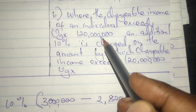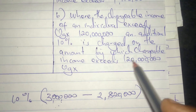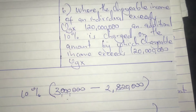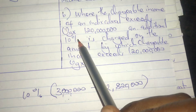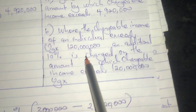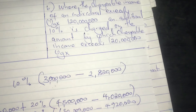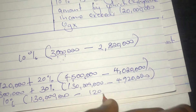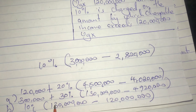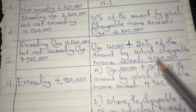There is also Part B: where the chargeable income of any individual exceeds 120,000,000, an additional ten percent is charged on the amount by which chargeable income exceeds 120,000,000. So for Part B, you take ten percent of 130,000,000 minus 120,000,000. You then add Part A and Part B together to get the total tax to be paid. This is the tax bracket for a resident individual on an annual basis.